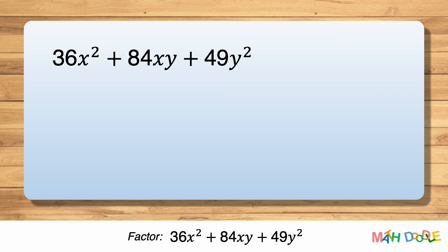Before factoring the trinomial, we can see that the first and last terms are perfect squares. The first term can be written as 6x squared, and the last term can be written as 7y squared.